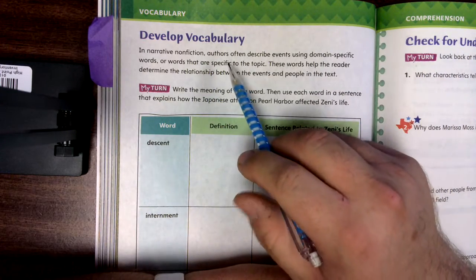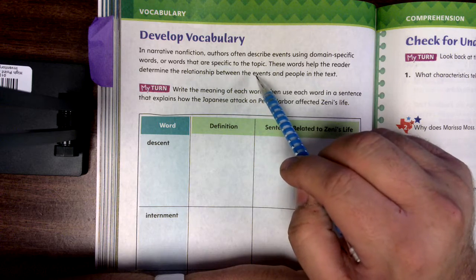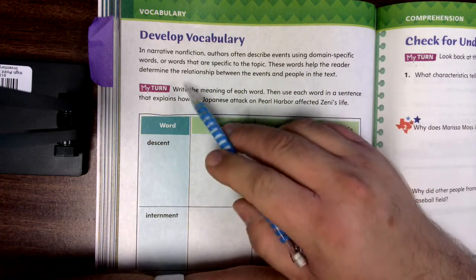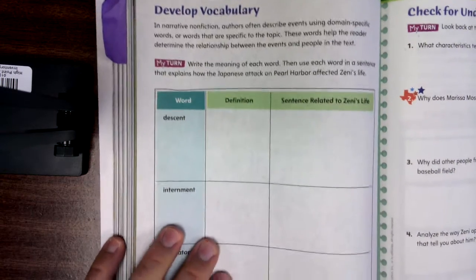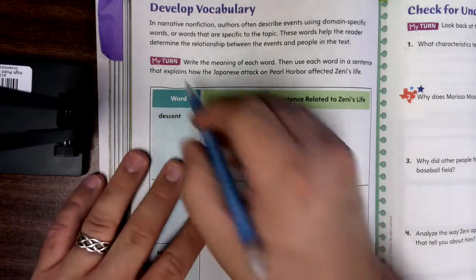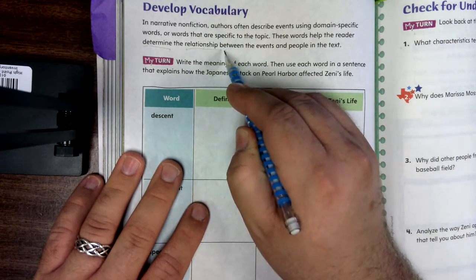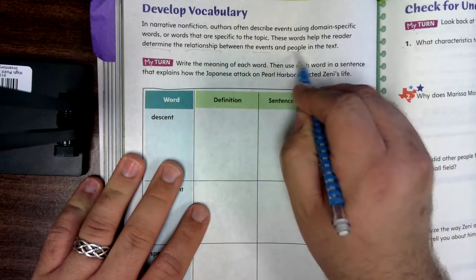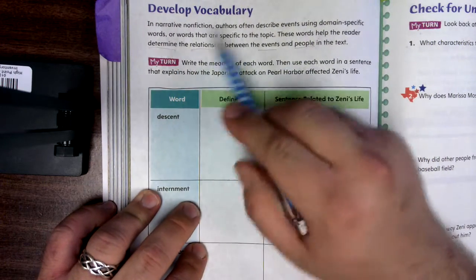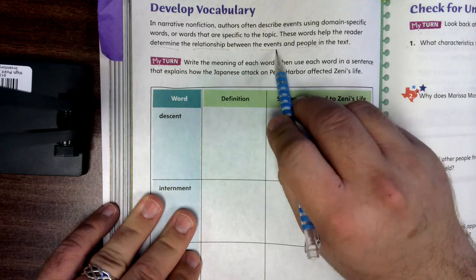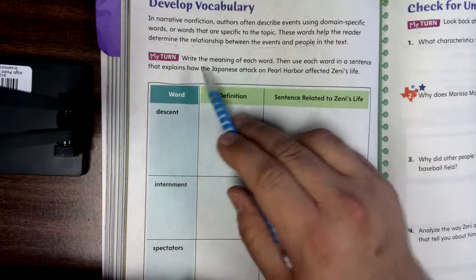In narrative non-fiction, authors often describe events using domain-specific words — words that are specific to the topic. These words help the reader determine the relationship between the events and people in the text. So specific vocabulary helps us figure out the relationship or connection between the events and people.